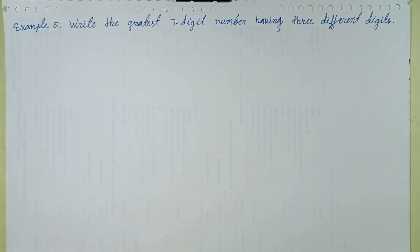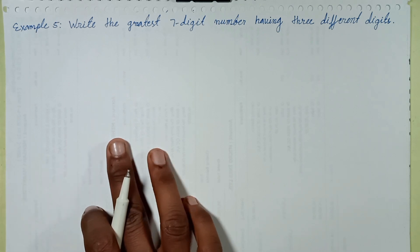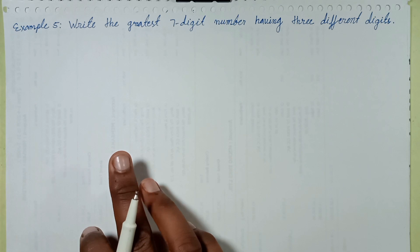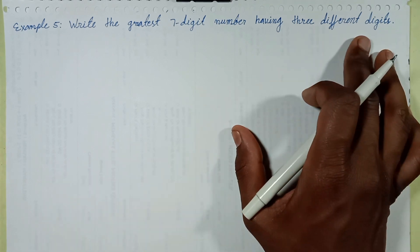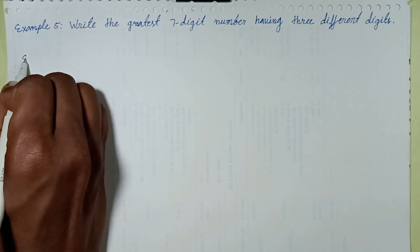Bande Mataram everyone, welcome back to this episode. This episode discusses example number five: write the greatest seven digit numbers having three different digits. This question belongs to R.D. Sharma mathematics for class 6. Let's solve it.